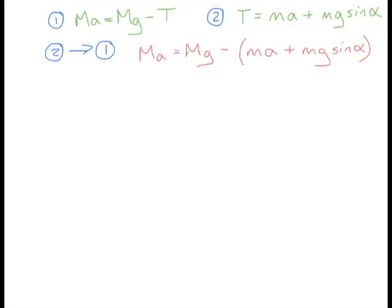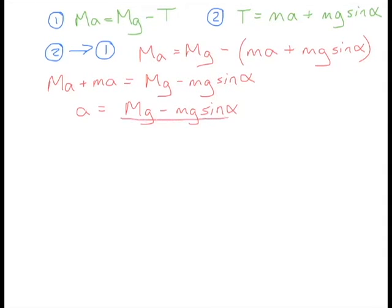Grouping our a's onto one side of the equation, that will give us big Ma plus little ma equals big Mg take away little mg sin α. So we can then solve this for a to give us Mg take away mg sin α divided by M plus m.